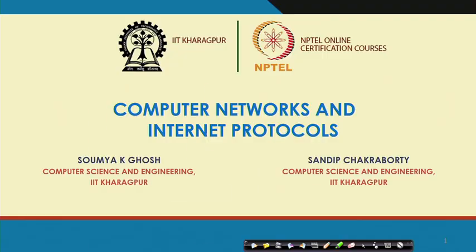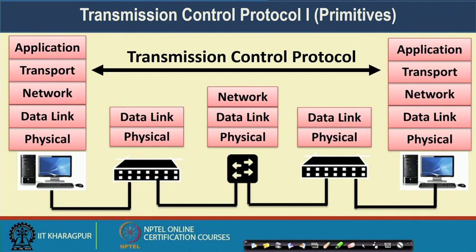Welcome back to the course on Computer Network and Internet Protocol. Till now we have looked into the details of the transport layer and what different services are being provided by the transport layer. Now we will take a specific example — a transport layer protocol which is widely used in the network. More than 80 percent of the traffic over the internet uses this Transmission Control Protocol to transfer end-to-end data. We will look into the details of TCP and later on we will look at how you can write an application with socket programming to send or receive data over TCP connections.